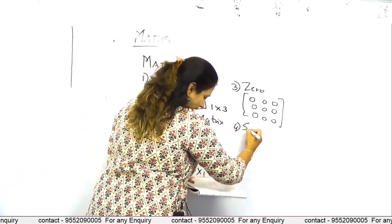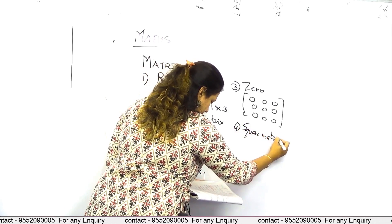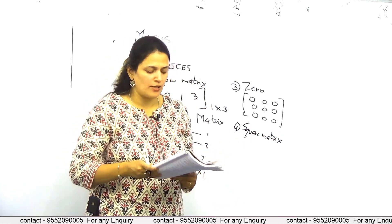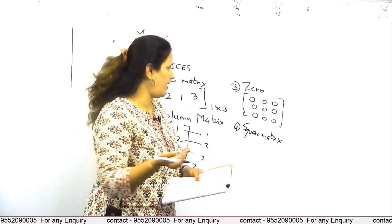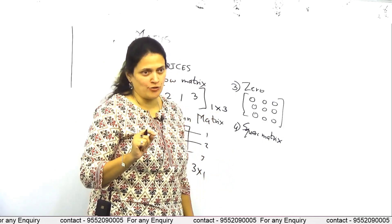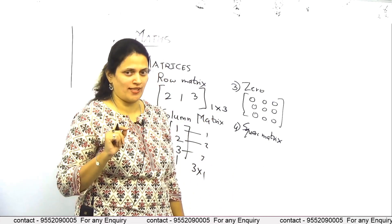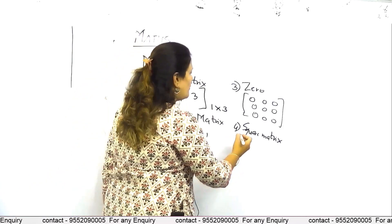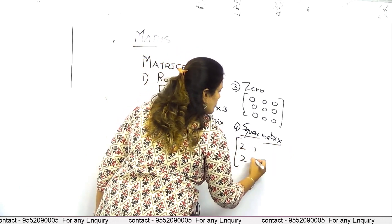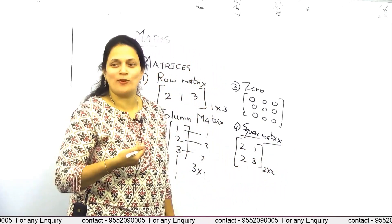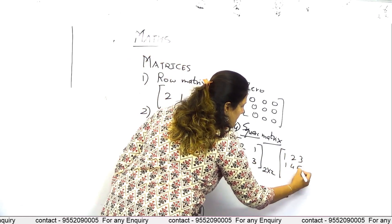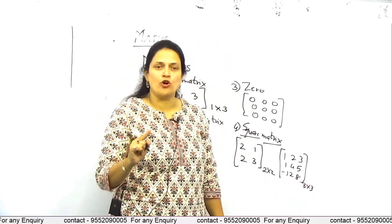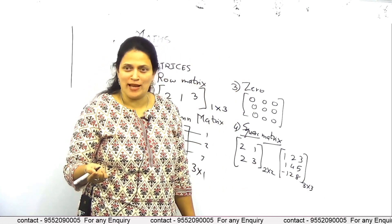The fourth type is a square matrix. A matrix in which the number of rows equals the number of columns is called a square matrix. For example, a 2×2 matrix and a 3×3 matrix are examples of a square matrix because the number of rows and columns are equal.